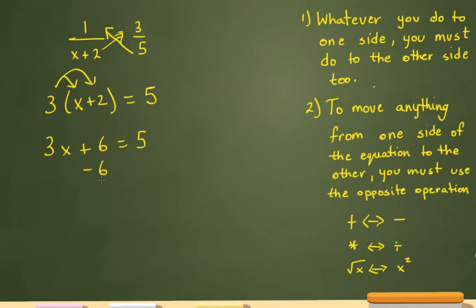I have to subtract the 6 here, and if I'm subtracting the 6 here, I subtract the 6 here as well, which leaves me with 3x equals negative 1.